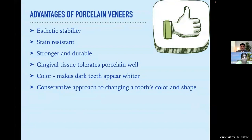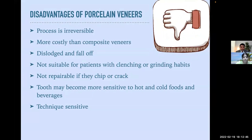What are the advantages of porcelain veneers? Aesthetic stability, stain resistance, stronger and durable. The gingival tissue tolerates porcelain well. The color of the porcelain veneer can be selected such that it makes dark teeth appear whiter, and all these veneers offer a conservative approach to changing a tooth's color and shape. Disadvantages: this process is irreversible and more costly than composite veneers. Porcelain veneers can be dislodged and fall off, are not suitable for patients with clenching and grinding habits — we need to treat bruxism first — are not repairable if they chip or crack, and tooth may become more sensitive to hot and cold. It is very technique sensitive.